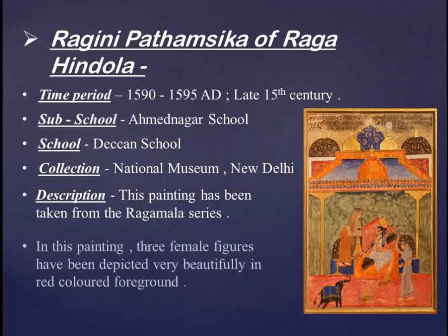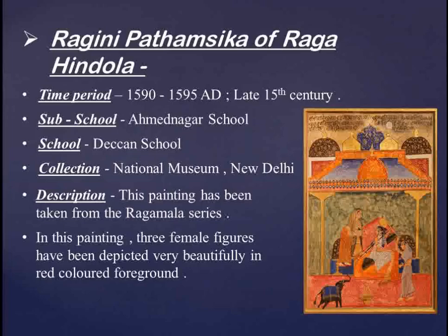This painting has been taken from the Ragmala series. Three female figures have been depicted very beautifully — in the foreground there is a red colored carpet scene with three females. A golden lamp, a jar, and a yellow elephant toy figure have been created. The architecture shows a tomed and symmetrical form, and at the top portion of the painting, a script has been written.